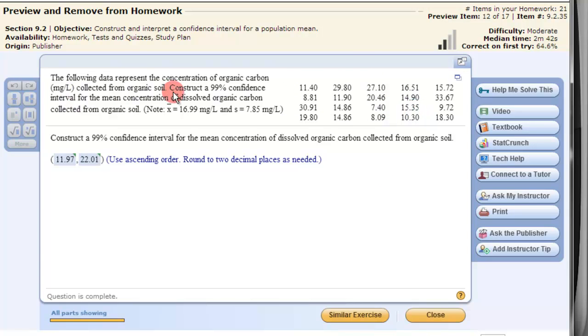It's kind of funny though in this question they actually give us the mean and standard deviation, but let's work with if we're given data. And they want us to construct a 99% confidence interval for the mean concentration of dissolved organic carbon collected from organic soil. Okay, here's the answer, but how do we get it?